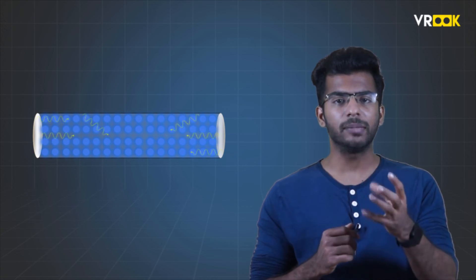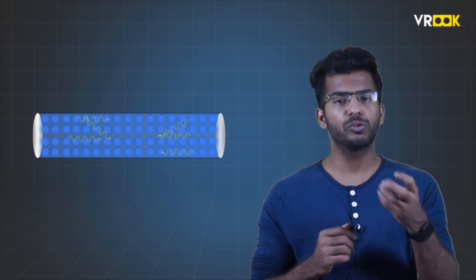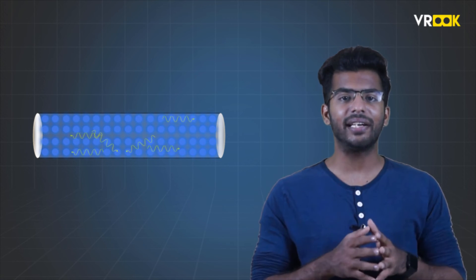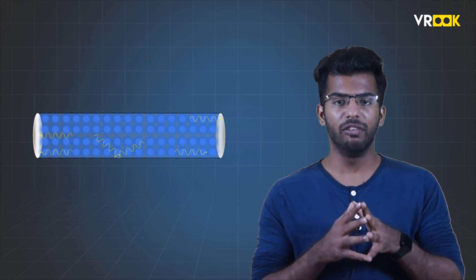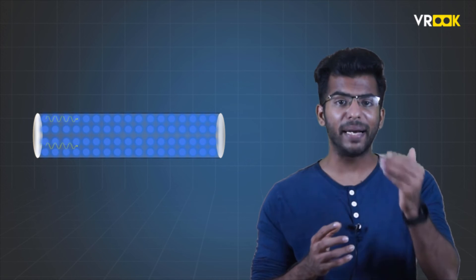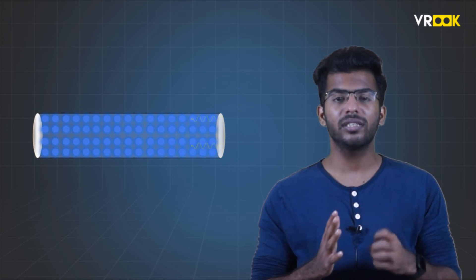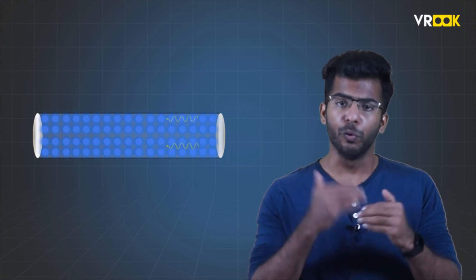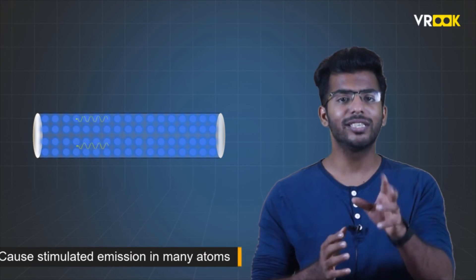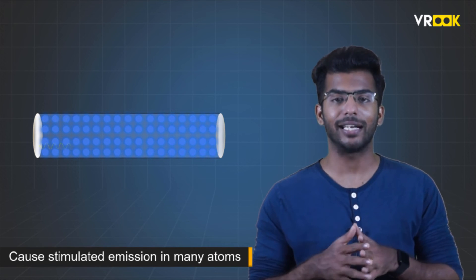When some of the atoms release the photons through spontaneous emission, they can travel in any direction. However, the photons which are perpendicular to the mirror will keep on reflecting back and forth. In this process, the photons will excite few more atoms and cause stimulated emission in many atoms.